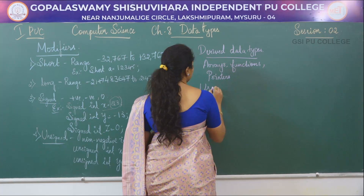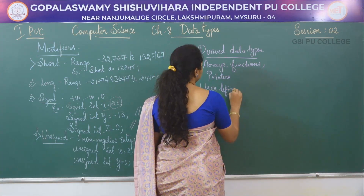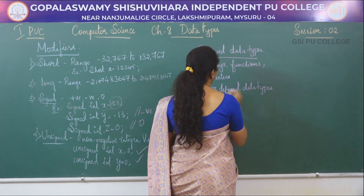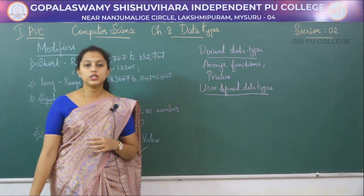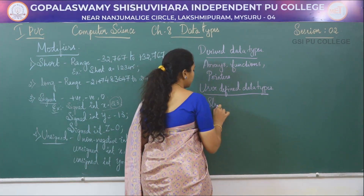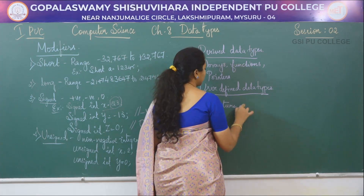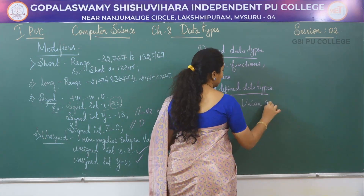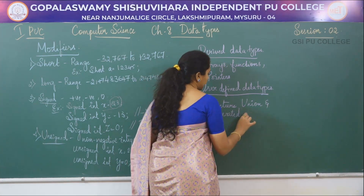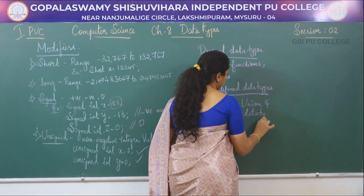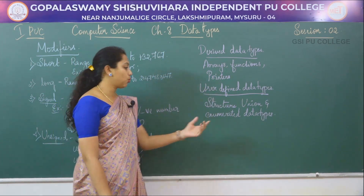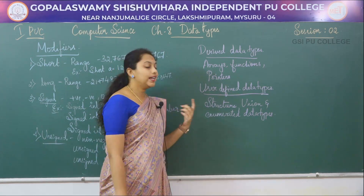The next type is user-defined data types. User-defined data types are data types which are derived from simple data types and defined by the user. Examples of user-defined data types are structures, unions, and enumerated data types.